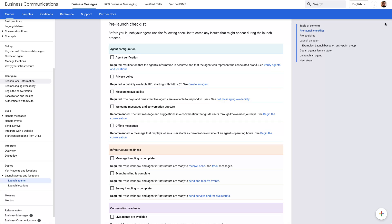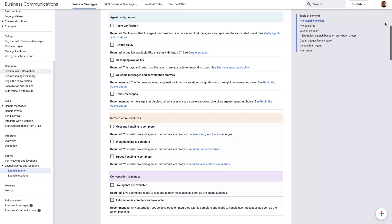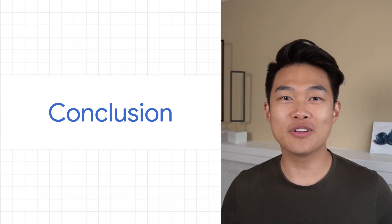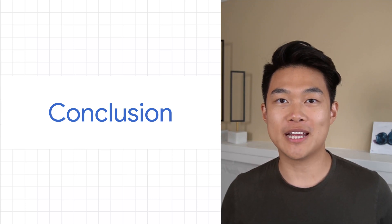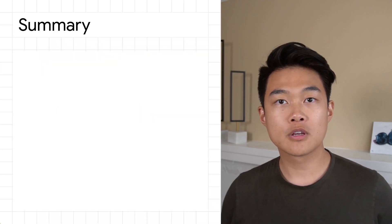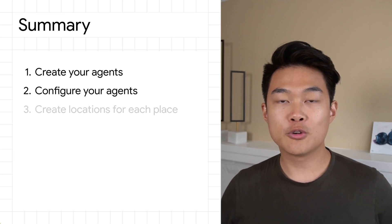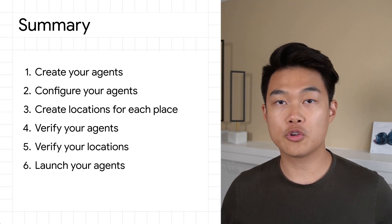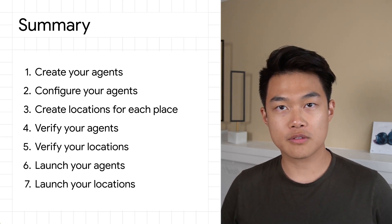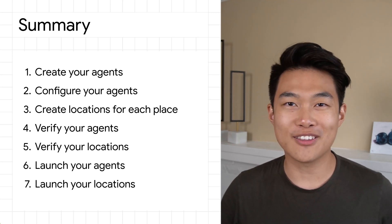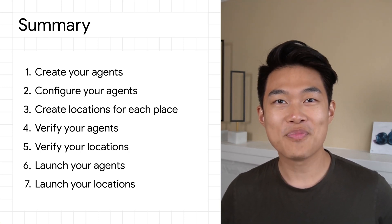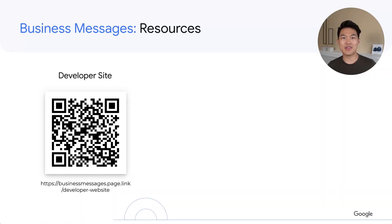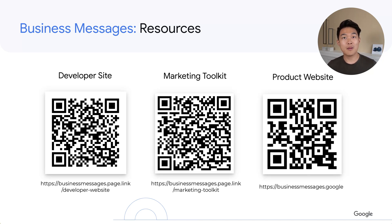Make sure to use the pre-launch checklist on the developer website to help catch any issues before you launch. In conclusion, the whole process of getting your agents onto Google Search and Google Maps is: create your agent, configure your agent, create locations for each brick and mortar place, verify your agent, verify your locations, launch your agents, and then launch your locations. Now that you have this information, verify and launch as many agents and locations as your heart desires. Thank you for watching. Make sure to check out the developer website, the marketing toolkit, and the product website, and catch us at our bi-weekly office hours. Thank you again and see you soon.